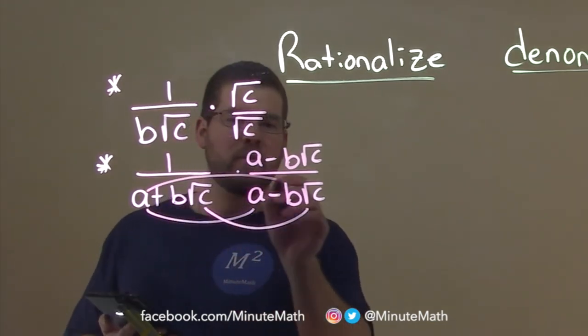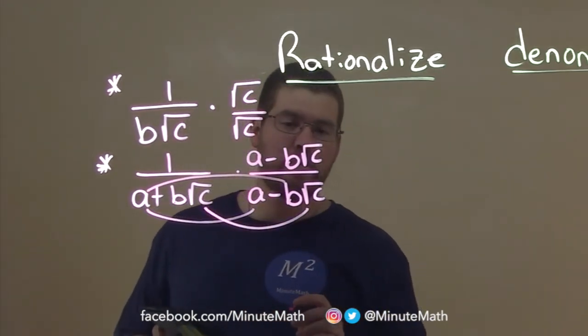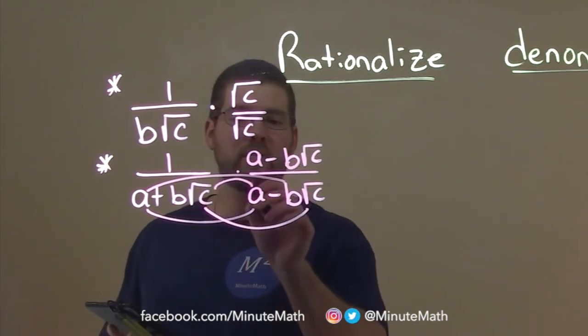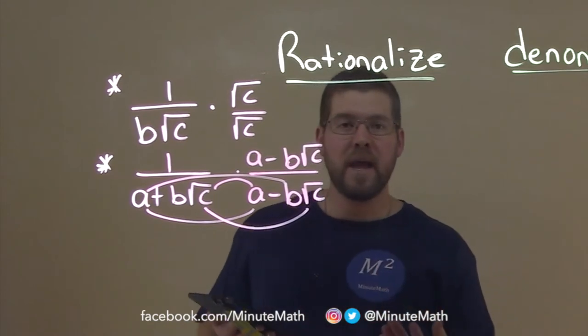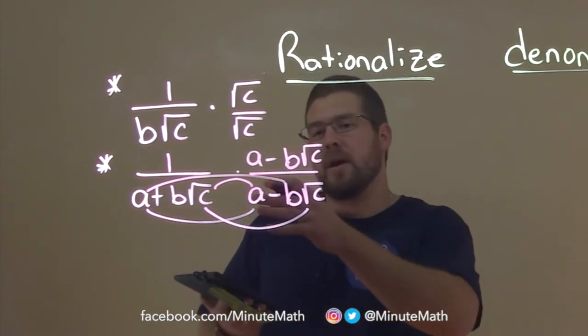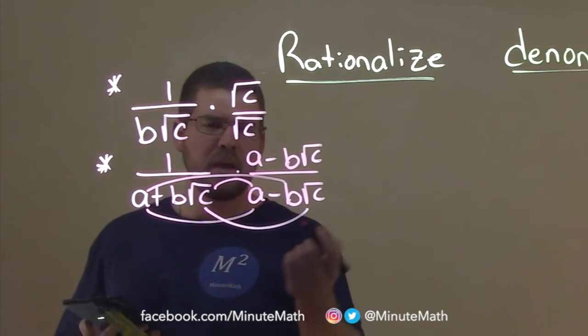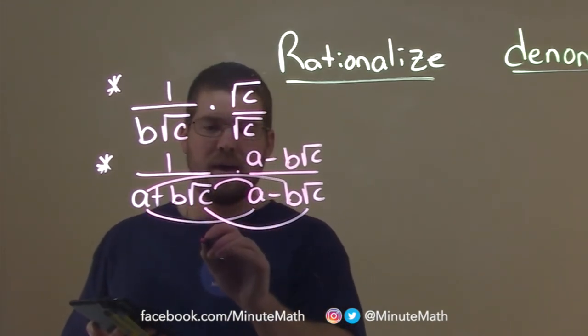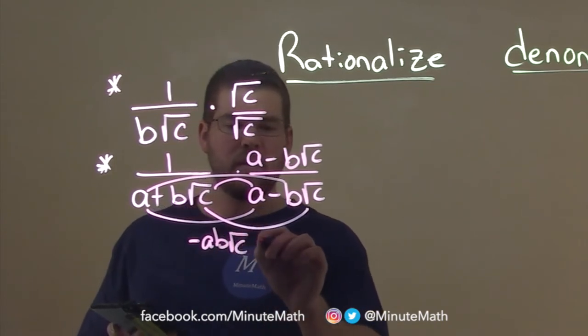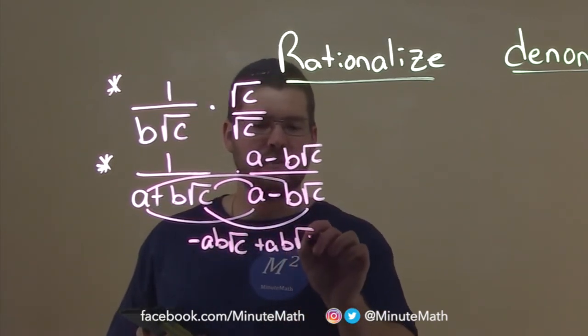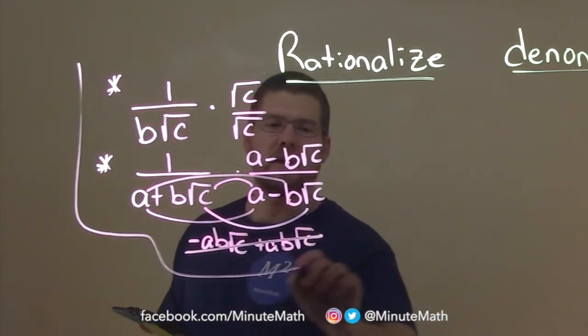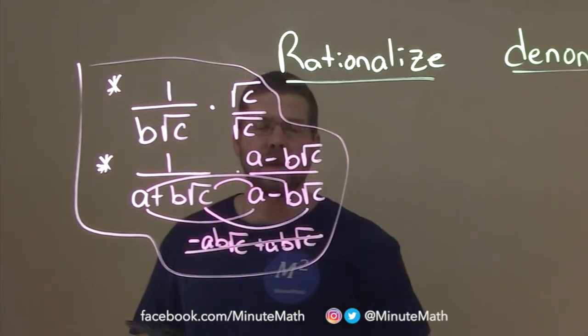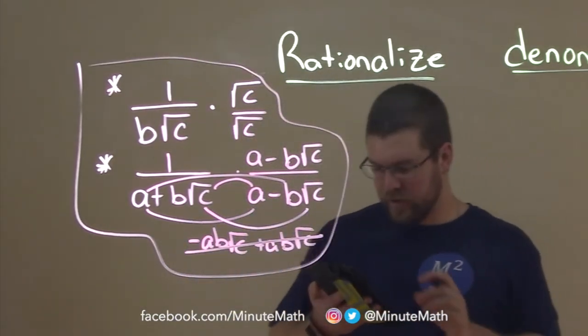If we take a and multiply it by negative b square root of c and b square root of c times positive a, we'll have the same exact thing but a positive and negative and they eliminate. And that's why this becomes helpful. That little part here will have a negative ab square root of c plus a positive ab square root of c and they cancel. So that's really where this whole thing becomes useful. And we can see that with some of our examples here. So let's go dive in.